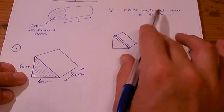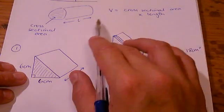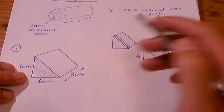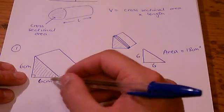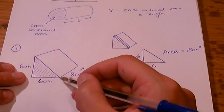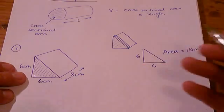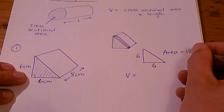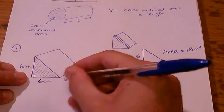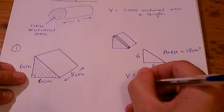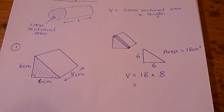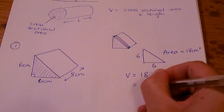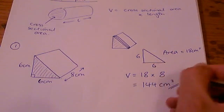Then the formula says we have to take that area and multiply it by the length. The length of a prism is how far back into the page it's going, and in this case that's 8 centimeters. So the volume is going to be the cross-sectional area multiplied by the length: 18 times 8 is 144 centimeters cubed. Remember volume is given in cubic units.